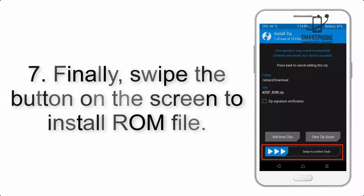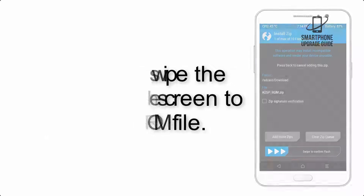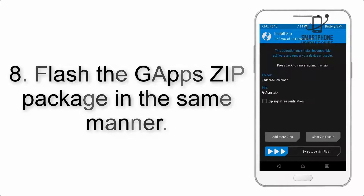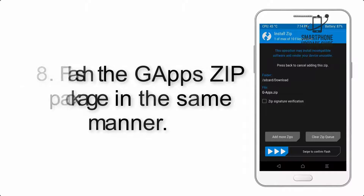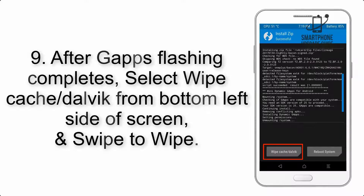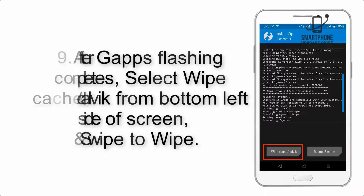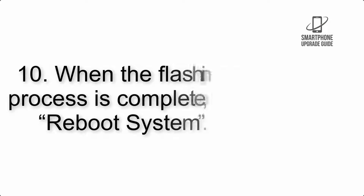Step 7: Swipe the button on the screen to install the ROM file. Step 8: Flash the GApps zip package in the same manner. Step 9: After GApps flashing completes, select Wipe Cache and Dalvik from the bottom left side of the screen and swipe to wipe.